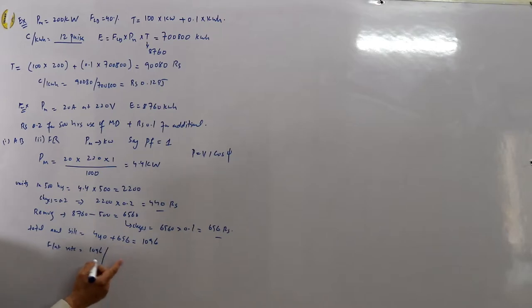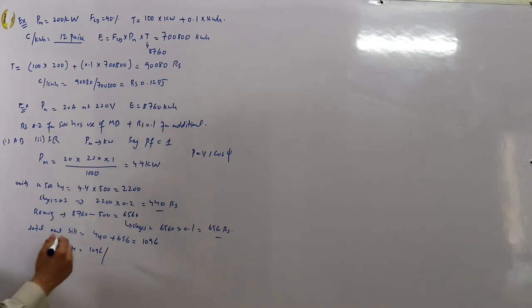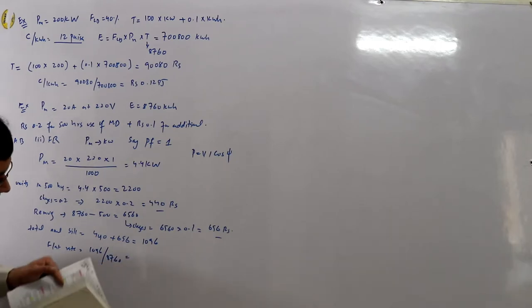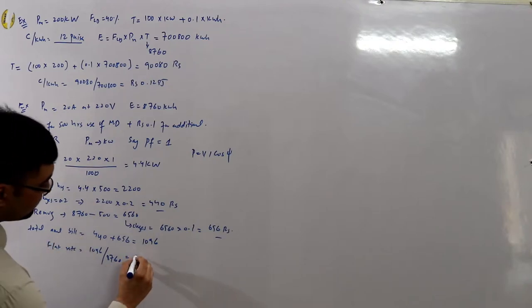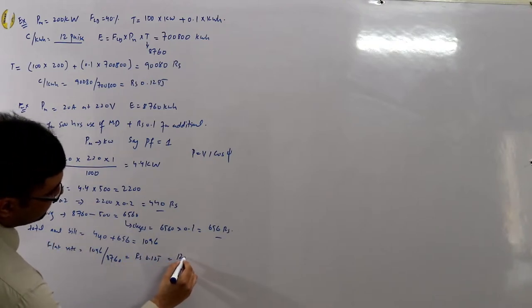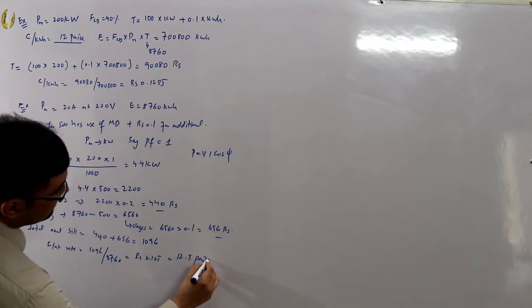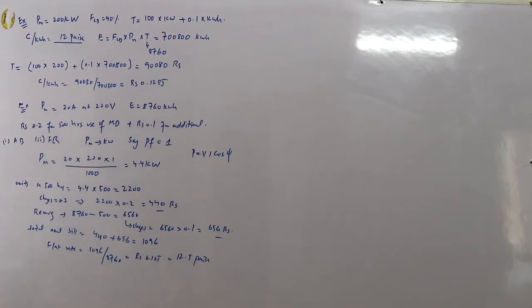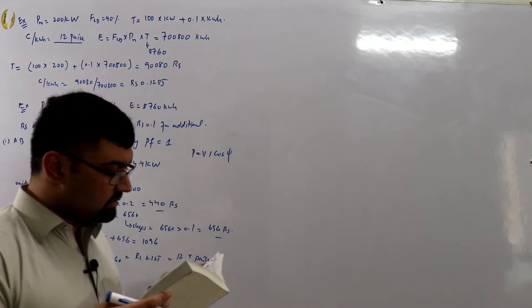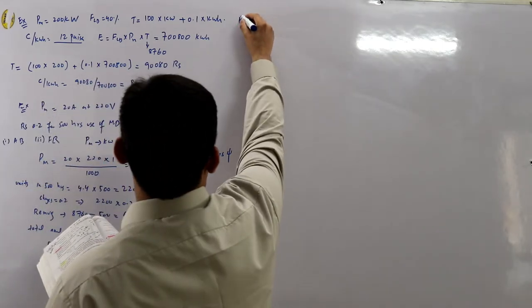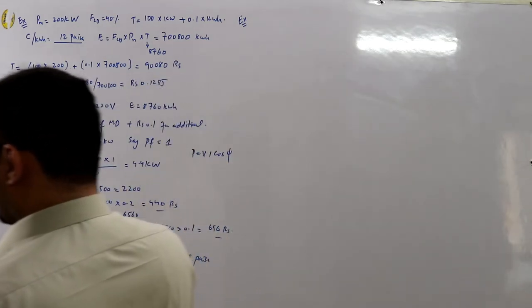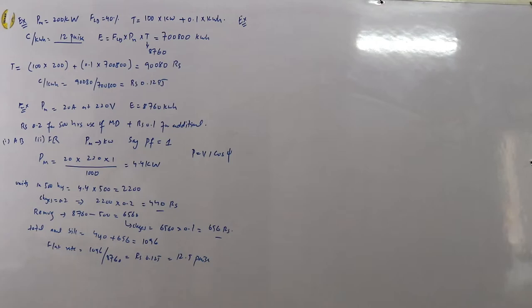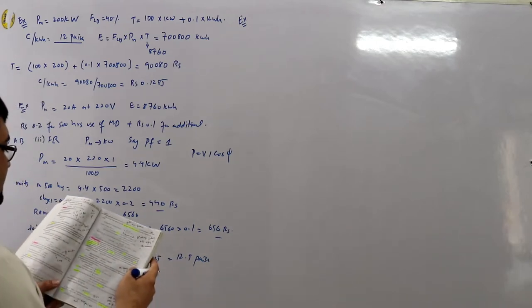The equivalent flat rate is total price divided by total number of units: 1096 / 8760 = rupees 0.125, or 12.5 paisa per unit.